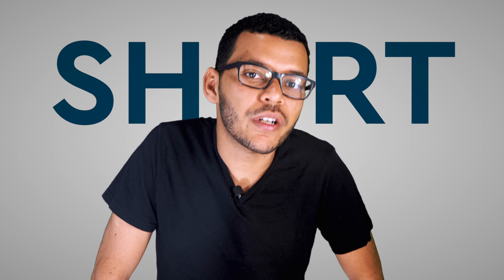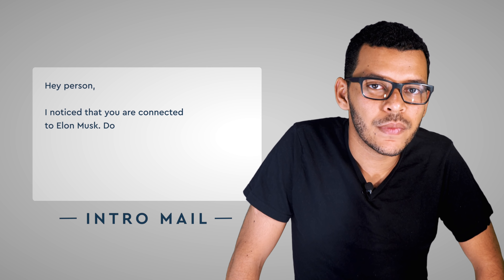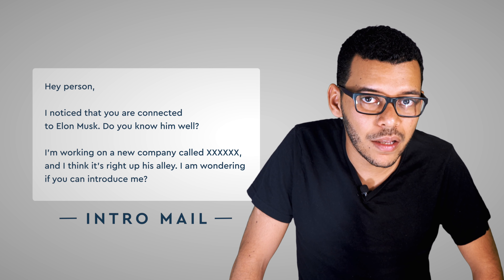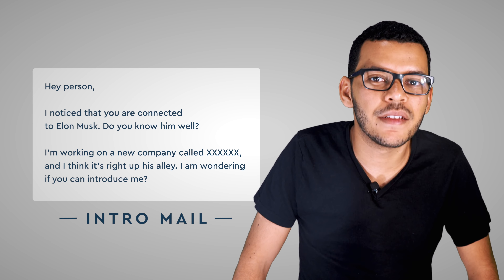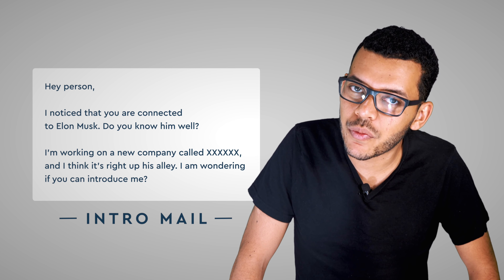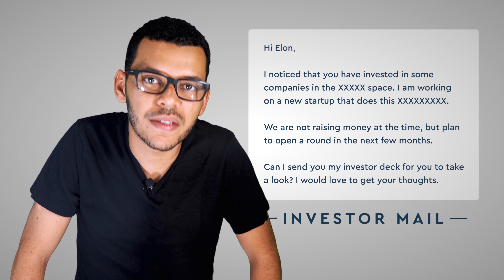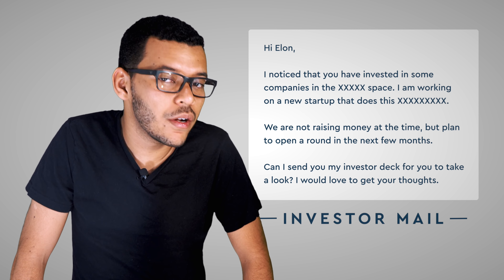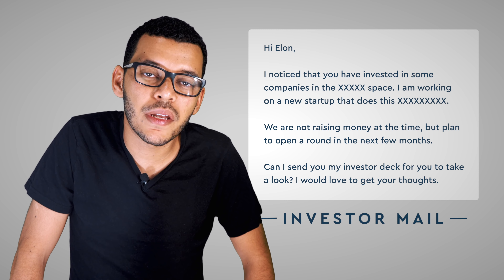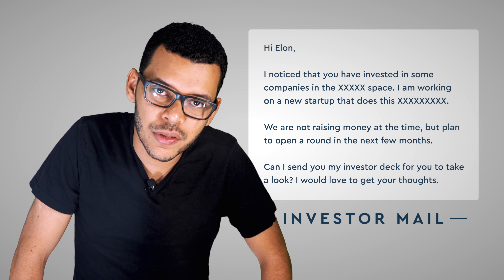The email pitch should be short and to the point. When requesting an intro, your email could look something like this: 'Hello, person. I noticed that you're connected to Elon Musk. Do you know him well? I'm working on a new company called Blah Blah and I think it's right up your alley. I'm wondering if you can introduce me.' For the investor email, assuming you get an introduction, you should also keep it short — something like: 'Hi Elon, I noticed that you have invested in some companies in the whatever space. I'm working on a new startup that does this. We are not raising money at the moment, but we plan to open a round in the next few months. Can I send you my investor deck for you to take a look?' Needless to say, you shouldn't try to reach Elon Musk. The reason why I recommend going with the 'not raising money at the moment' bit is because it helps.